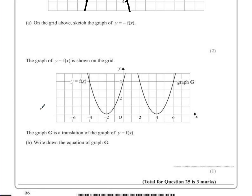Now the graph of y equals f of x is shown on the second grid. The graph of g is a translation of the graph of y equals f of x. Write down the equation of graph g.